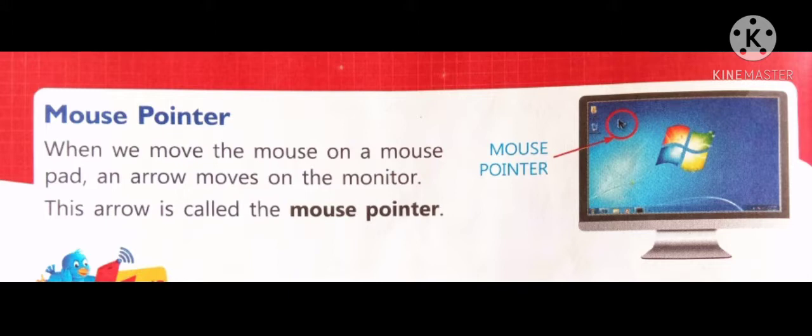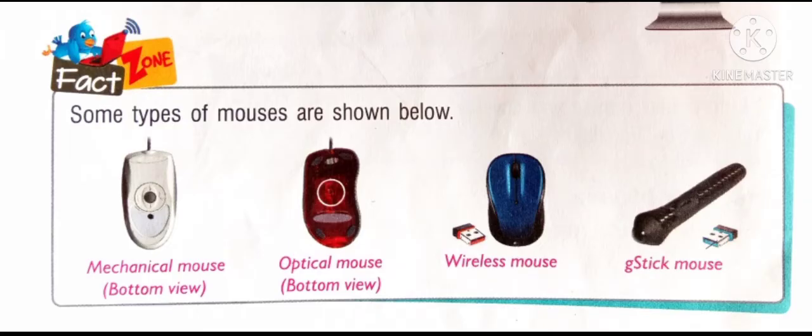Mouse pointer. When we move the mouse on a mouse pad, an arrow moves on the monitor. This arrow is called the mouse pointer.